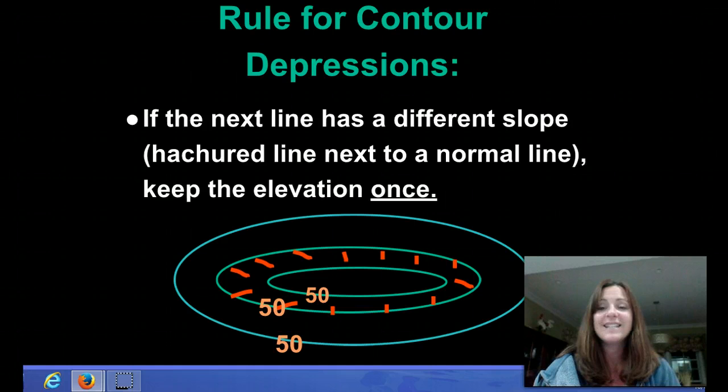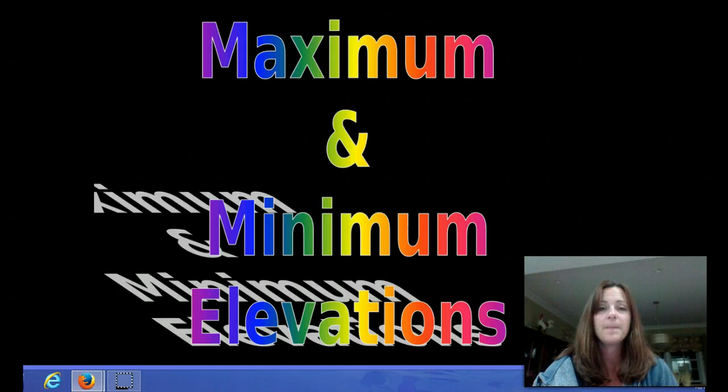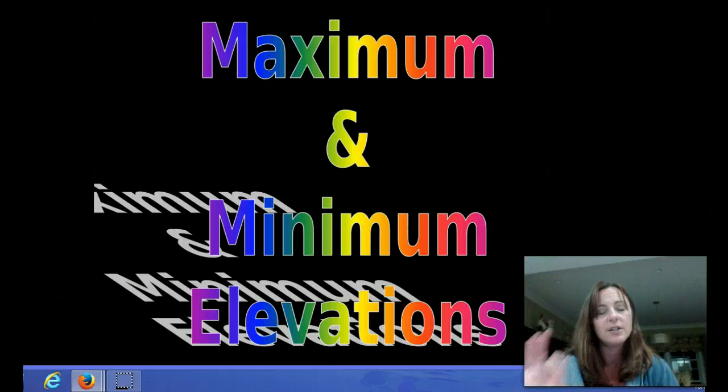If the next line has a different slope, hatcher line next to a normal line, again, you have to keep the elevation once. Okay, that's a very important rule. I said it twice, but you need to write it down and star it.